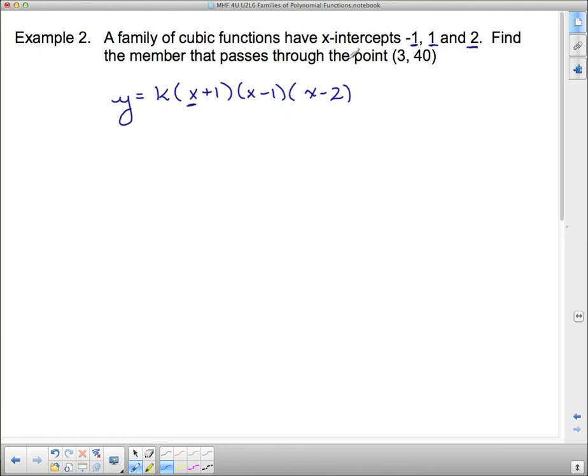Negative 1 would make this bracket 0. Positive 1 would make this bracket 0. And 2 would make this bracket 0.